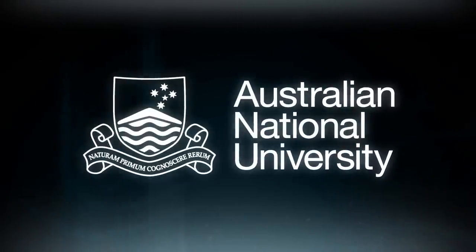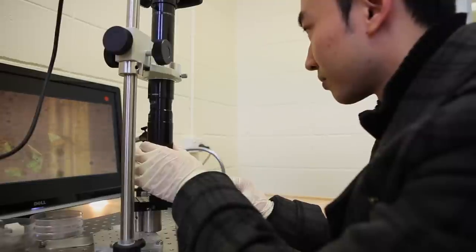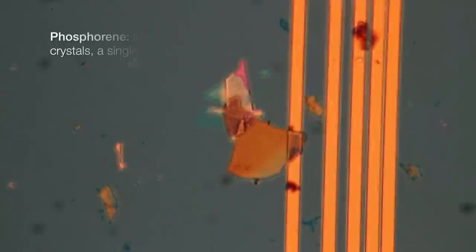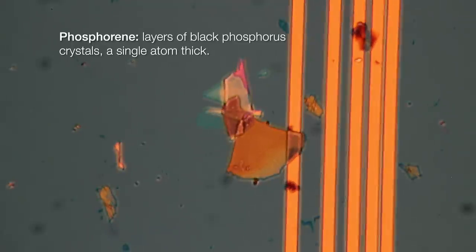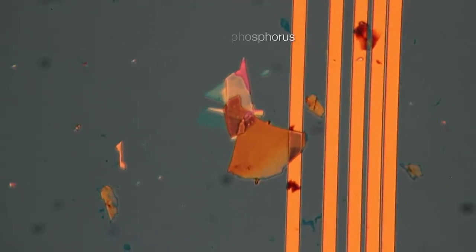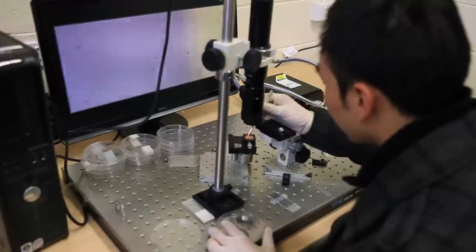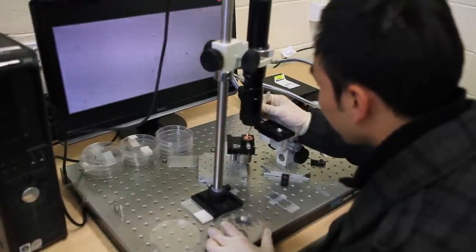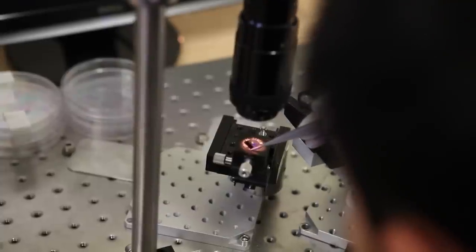We are working on a new semiconductor called Black Phosphorus or Phosphorene. Ultra-thin, ultra-light, and with wavelength tunability, which can offer us to fabricate lots of interesting devices such as LEDs and solar cells.